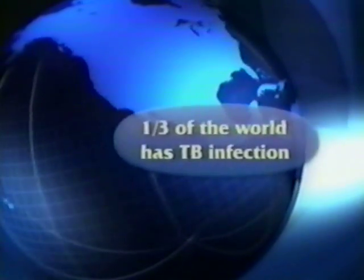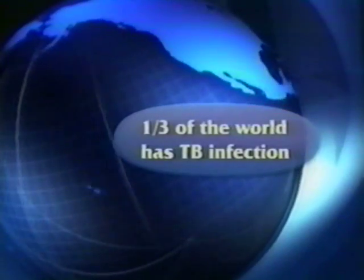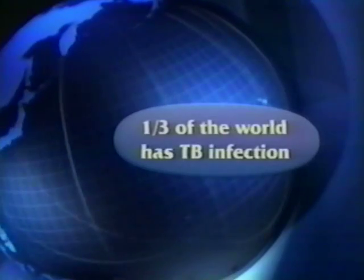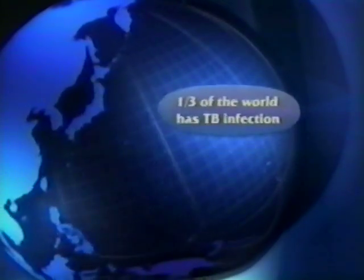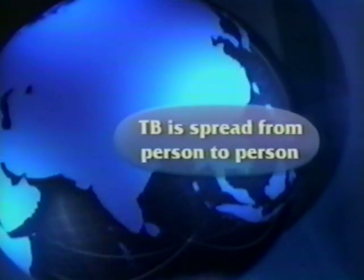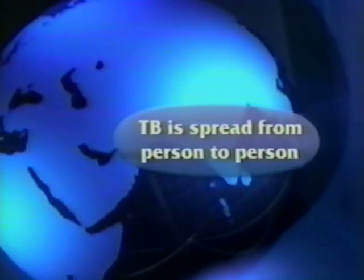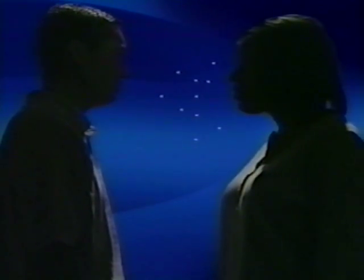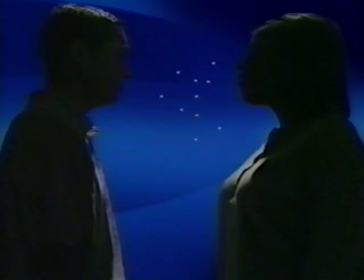An estimated 2 billion people, or one-third of the world's population, are infected with the bacteria that cause tuberculosis. One reason so many people are infected with TB is that it's spread through the air from one person to another. When someone with TB disease of the lungs or throat coughs or sneezes, the bacteria are expelled into the air. If people nearby breathe in these bacteria, they can become infected.